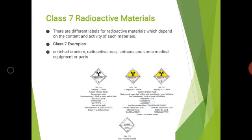The next class is class 7, radioactive material. Examples include enriched uranium, radioactive ores, and isotopes. It can be categorized as 7A, 7B, and 7C based on the level of radioactivity, and various symbols are assigned for each type.